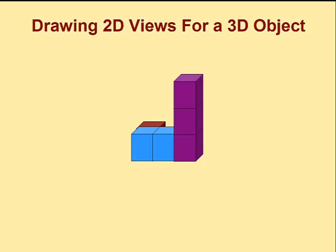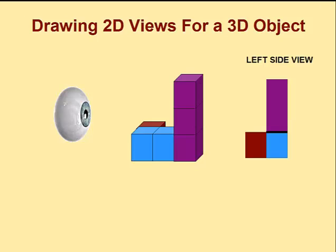We'll begin with our three-dimensional object made out of different colored cubes. If we look at this object straight on from the left-hand side, we would see something like this.